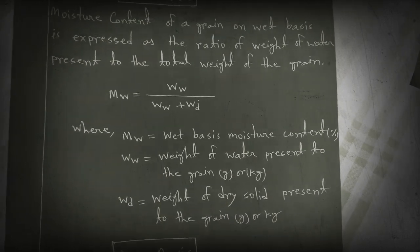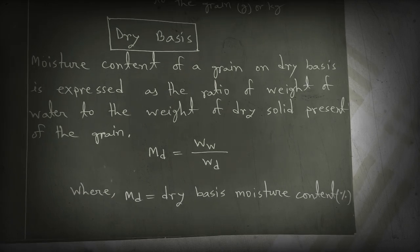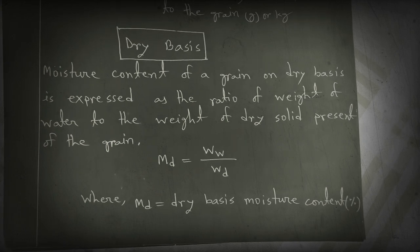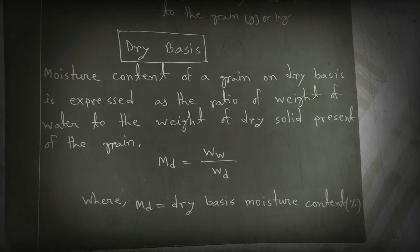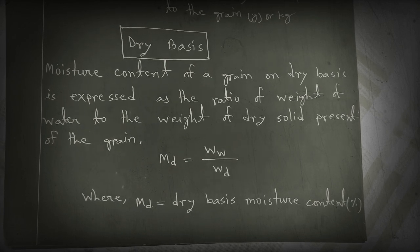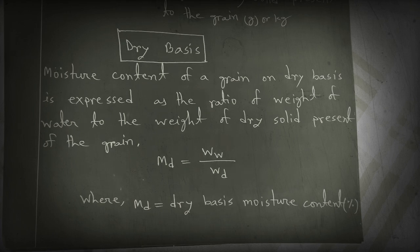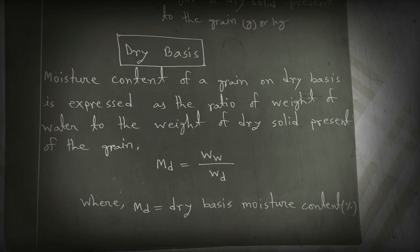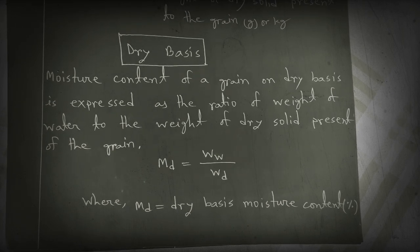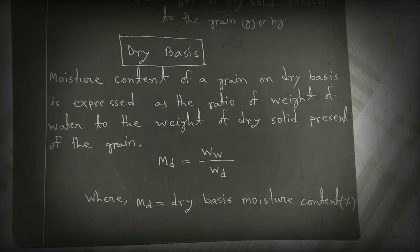The moisture content of a grain on dry basis is expressed as the ratio of weight of water to the weight of dry solid present in the grain. The formula is: Md = Ww / Wd, where Md is the dry basis moisture content, Ww is the weight of water present in the grain, and Wd is the weight of dry solid.